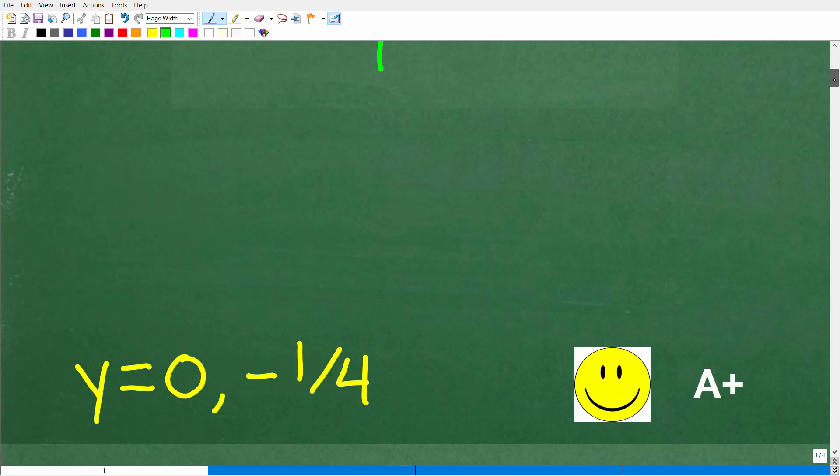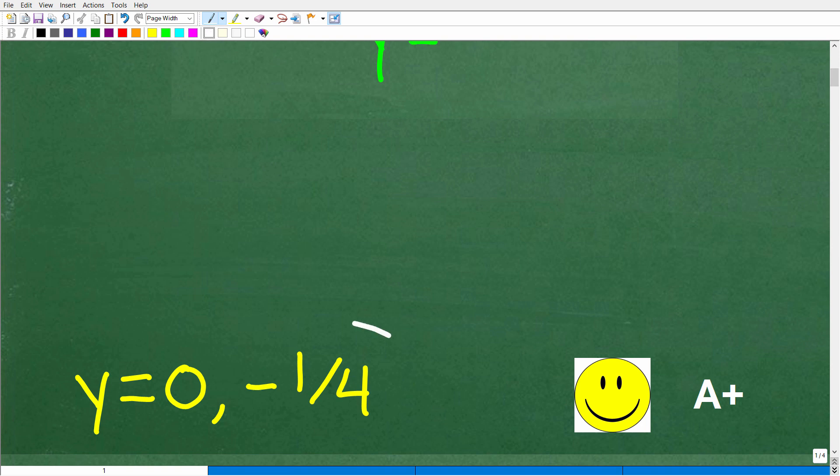Well, y is actually equal to two numbers. There's two solutions here. So the solutions are zero and negative one-fourth. All right, now, if you got this right, well, you definitely got a happy face and an A plus, and if you're like, Mr.